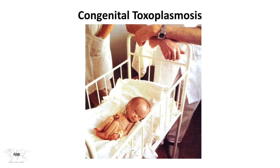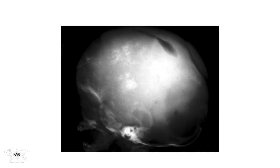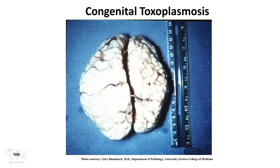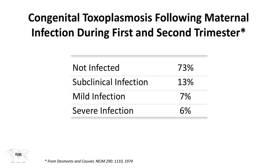Here's an unfortunate child — a victim of congenital toxoplasmosis. These plane radiographs show some of the calcifications. This is actually a post-mortem brain from a child who died of congenital toxoplasmosis. This chart shows congenital toxoplasmosis following maternal infection in the first or second trimester: about 6% develop severe infection, while the majority do not acquire infection. Once in the third trimester, risk of transmission increases but severity of manifestation decreases.